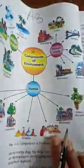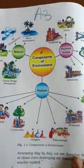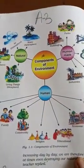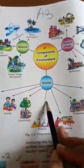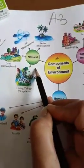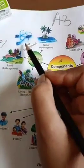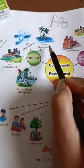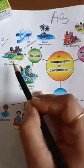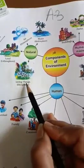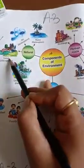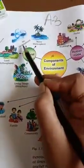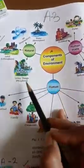On this page, you will see a diagram showing the components of the environment. There are three components of the environment. First, natural — what I get from nature: air (atmosphere), water (hydrosphere), land (lithosphere), and living things (biosphere). This is what we studied in Standard 5 — our domains: atmosphere, hydrosphere, lithosphere, and biosphere.